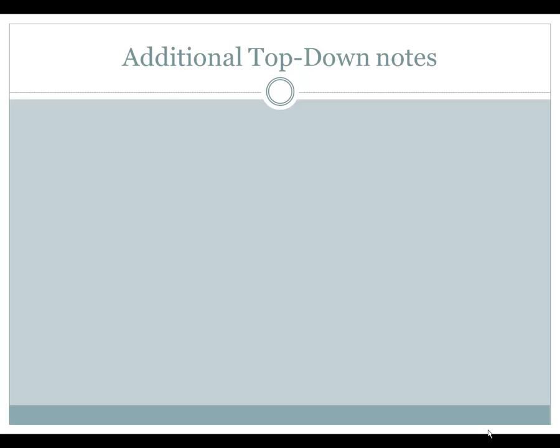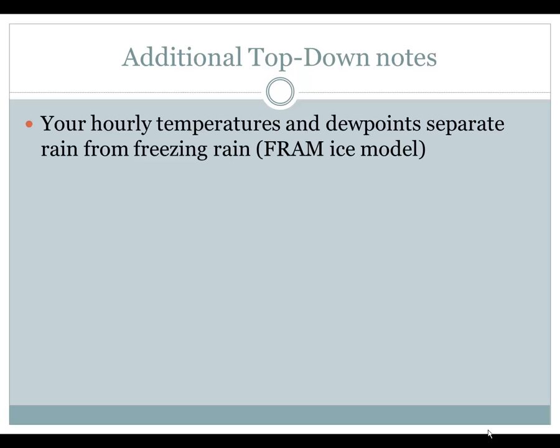Some additional top-down notes. First, your hourly temperatures and dew points will separate rain from freezing rain. The dew points in particular are important because of the FRAM ice model, where they found instances where temperatures may be above freezing but because dew points are below freezing, the wet-bulb effect could cause icing on surfaces.